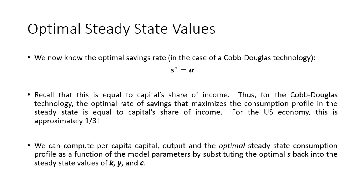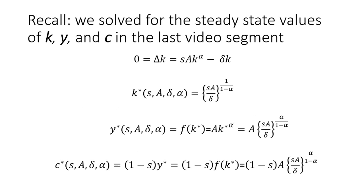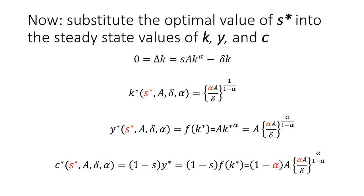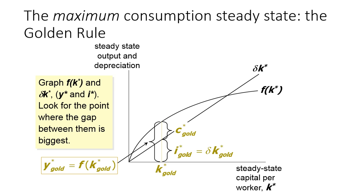So now notice, now that we know the optimal s-star, we can plug this back into our steady-state solutions of k, y, and c, which we had derived previously. All we're going to do now is go back to our original values. Everywhere I had an s, I'm going to substitute our optimal value of s, which we know now was alpha. So now what we've found are the steady-state values of capital, income, and consumption in the steady-state that allows us to enjoy the most possible consumption, the highest standard of living.